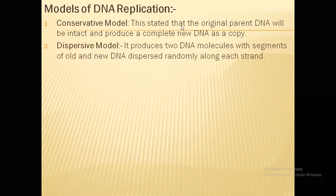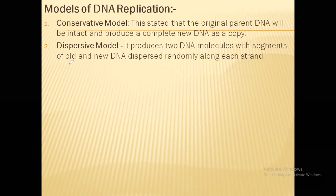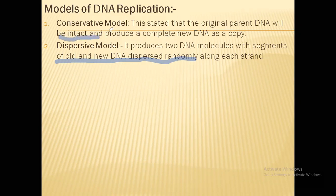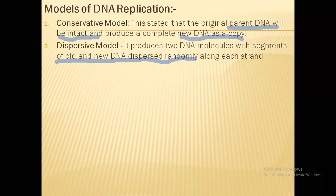The second model is the dispersive model. The word dispersive means to disperse, to divide, to separate away. This model states that the DNA breaks into small pieces — the DNA will first get into smaller fragments or segments, each of the segments will form their copies, and they will again rearrange randomly to form the DNA. So it produces two DNA molecules with segments of old and new DNA dispersed randomly. These two models are both extremes: one says the parental DNA is completely preserved and a new DNA forms, while the other says the DNA is broken and old and new copies are randomly arranged.